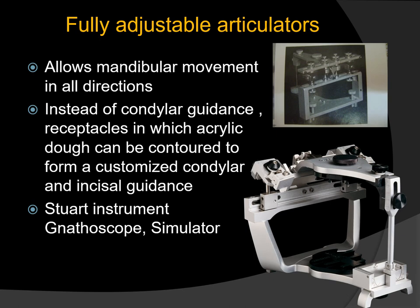Fully adjustable articulators allow replication of three-dimensional movements of recorded mandibular motion. These articulators have numerous adjustable settings which can be customized for each patient and they do not have a condylar guidance; instead, they have receptacles in which acrylic dough can be contoured to form customized condylar and incisal guidance. Such customization can also be done in fully adjustable articulators, but these are not commonly used because of their complexity. Examples are the Stott instrument, nathoscope, and simulator. There is also the fully adjustable gnathological articulator which allows replication of three-dimensional movement plus timing of the recorded mandibular motion — examples are CAVO, PROTAR, and Denar.